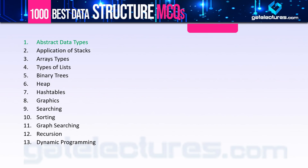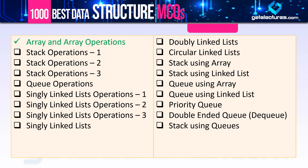The first topic is Abstract Data Types. The chapter list includes: Abstract Data Type, Applications of Stacks, Arrays, Array Types, Types of Lists, Binary Trees, Heaps, Hash Tables, Graphs — not 'graphics', that was a spelling mistake — then Searching, Sorting, Graph Searching, Recursion, and finally Dynamic Programming. The questions are sourced largely from the Sanfoundry website, but I'm providing thorough explanations for every question.